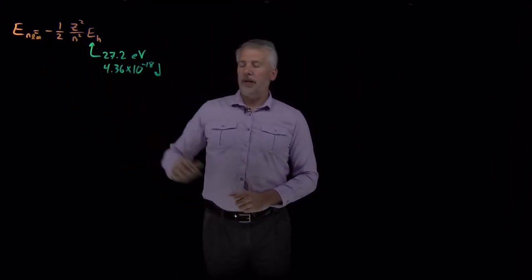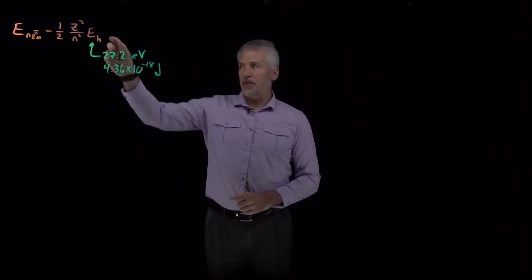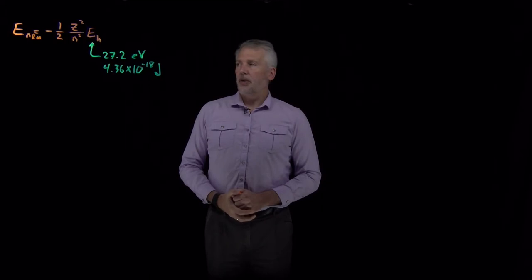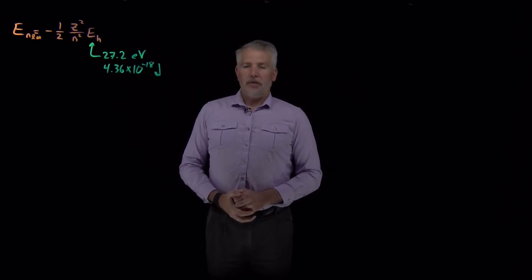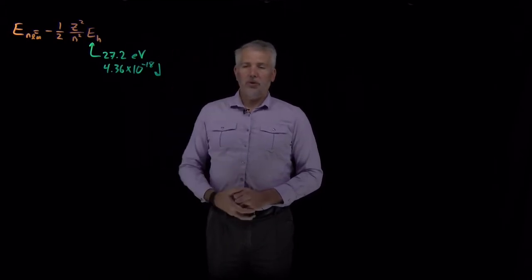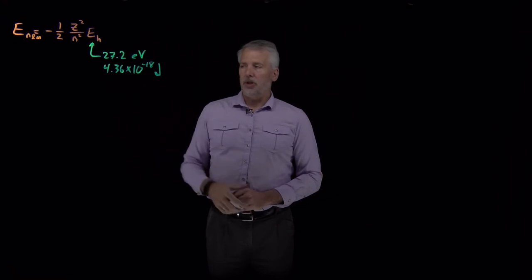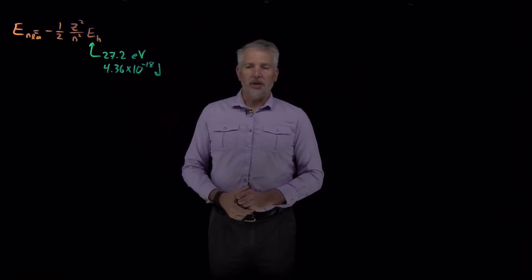We multiply that by some energy, some collection of constants that have the units of energy that we call a Hartree. That unit of energy is 27.2 in units of electron volts, which are pretty common for working with atomic energies. Or if you prefer SI units, it's 4.36 times 10 to the minus 18th joules.